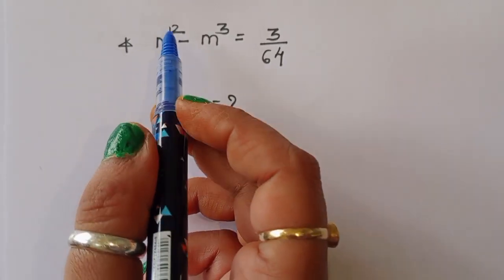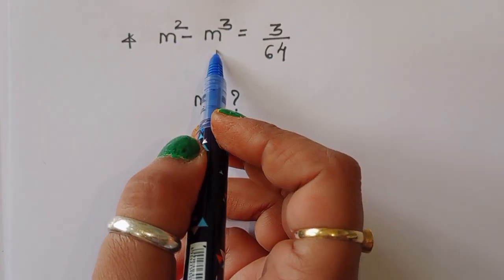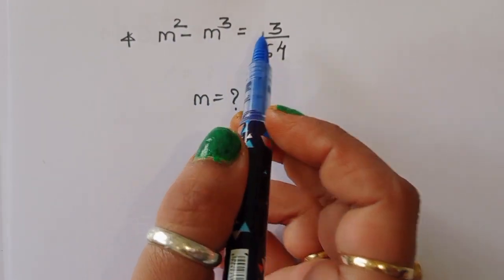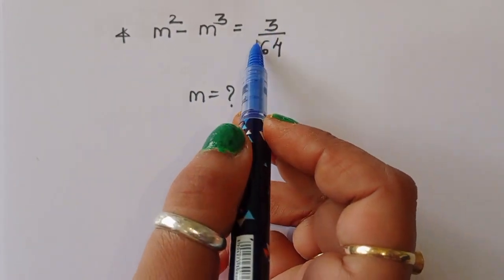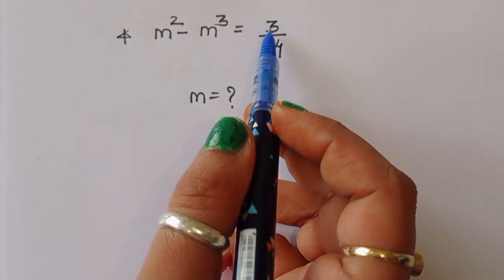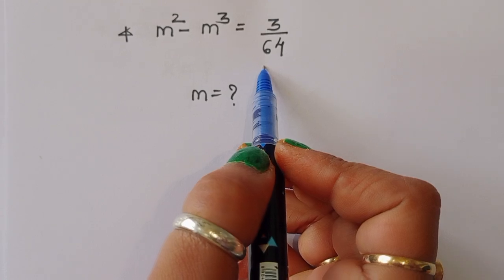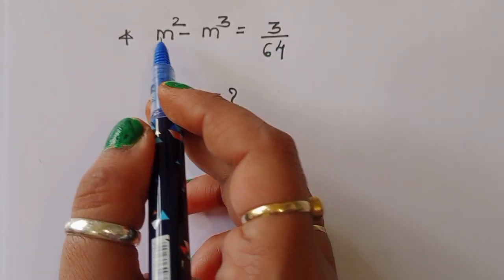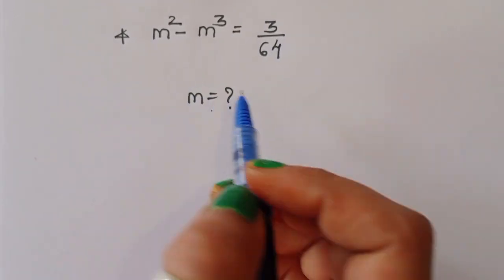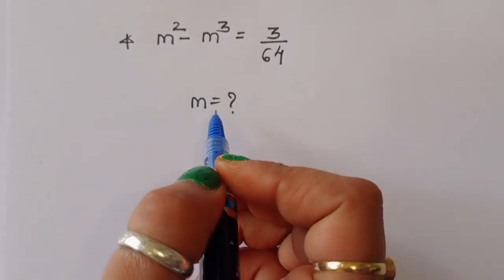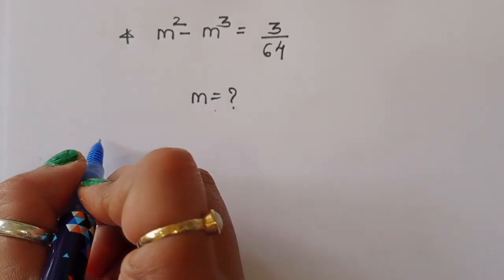The question is: given m squared minus m cubed is equal to 3 upon 64, we have to find out the value of m. Let's see the solution.